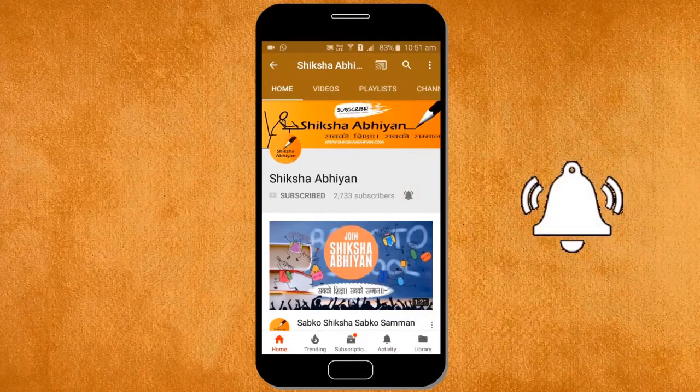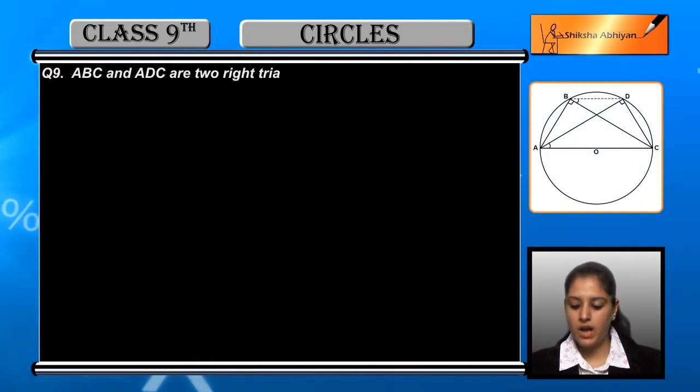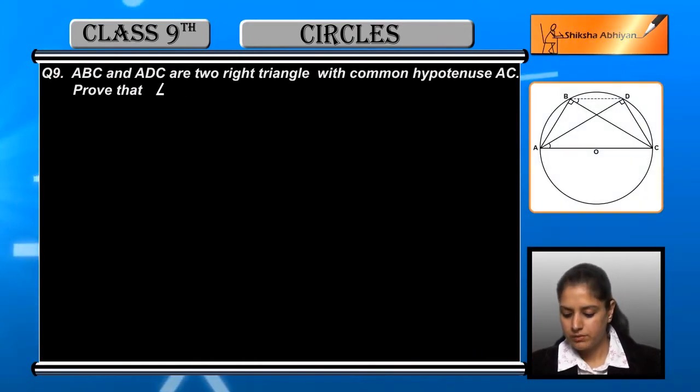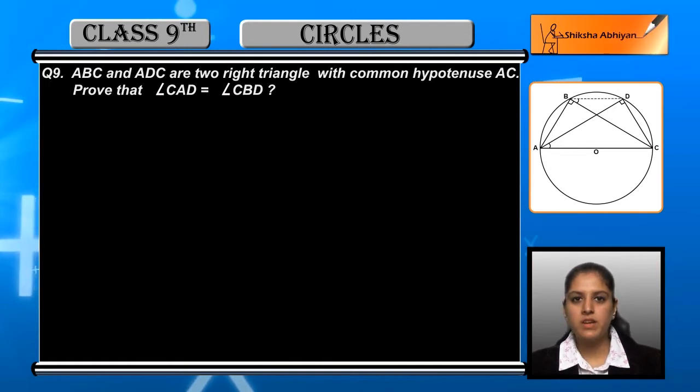Now the ninth question is: ABC and ADC are two right triangles with common hypotenuse AC. Now prove that angle CAD is equal to angle CBD.